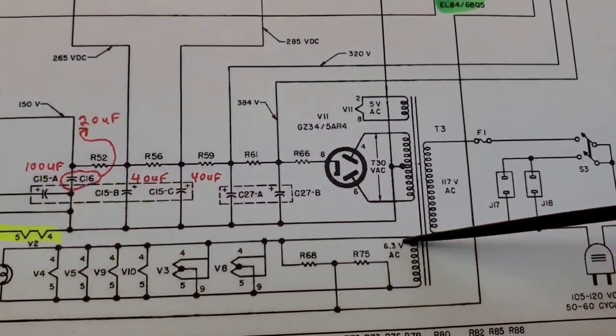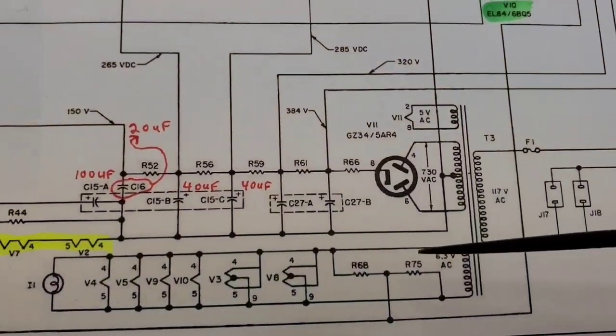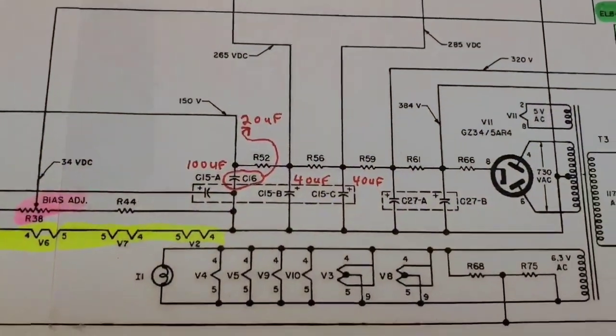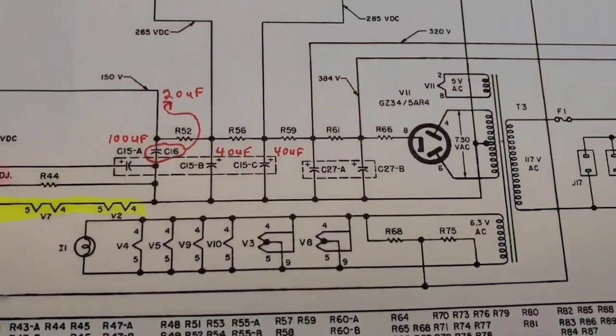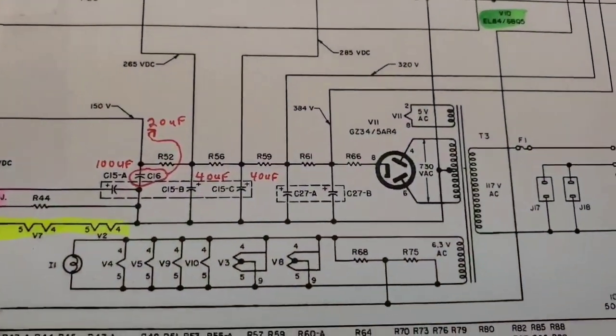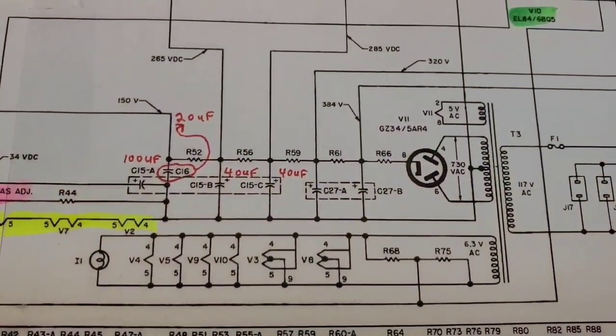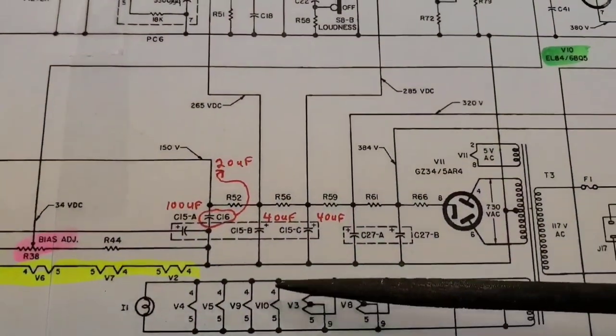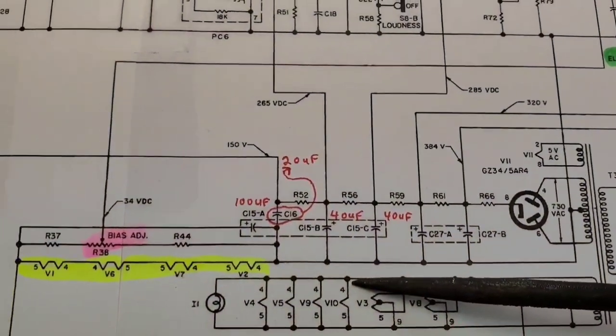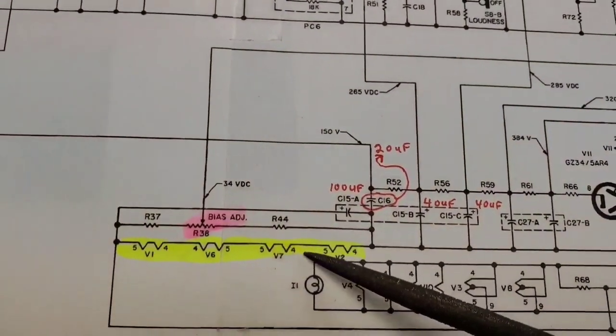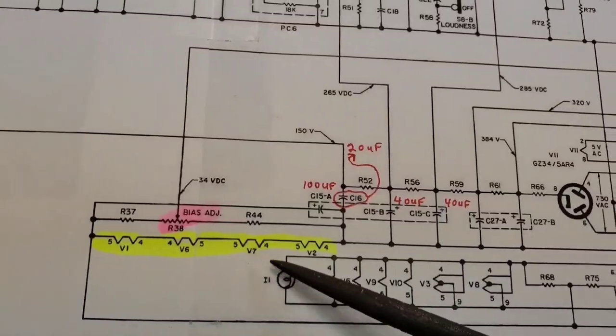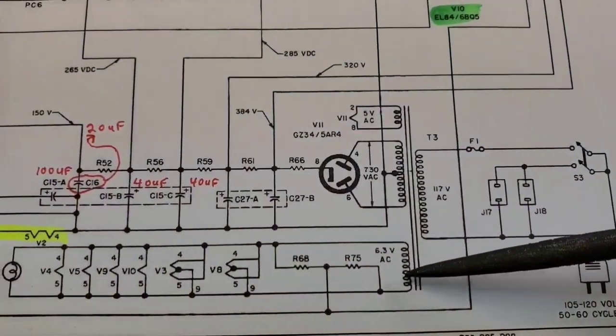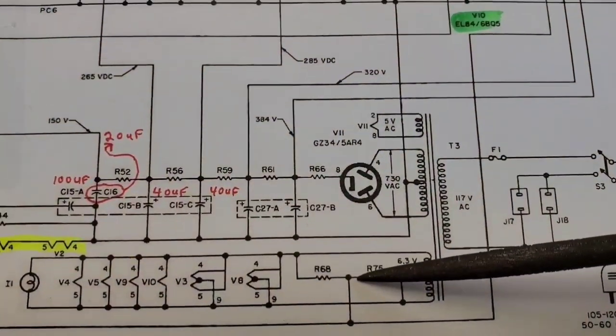Here's your 6.3 volt AC filament supply for your output tubes. The output tubes are amplifying a large signal. So you can get away with AC on the filaments. The preamp tubes, on the other hand, are very sensitive, and these are the preamp filaments. These are DC, and I'm going to show you how that is derived in a minute.